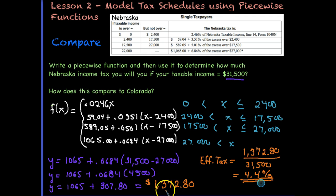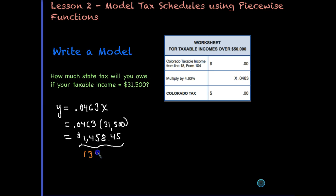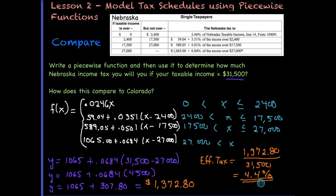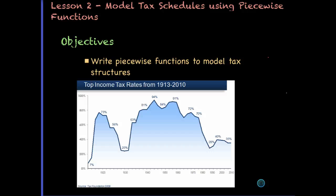Comparing Nebraska to Colorado on the same income: Nebraska is $1,372.80 versus Colorado's $1,458.45, so Nebraska is slightly less. Even though Nebraska's highest marginal rate of 6.84% exceeds Colorado's flat 4.63%, Nebraska makes up for it because $17,500 of income is taxed at lower rates. This concludes our lesson on modeling tax schedules using piecewise functions. You should be able to write piecewise functions to model tax structures and find the effective tax rate for each situation.